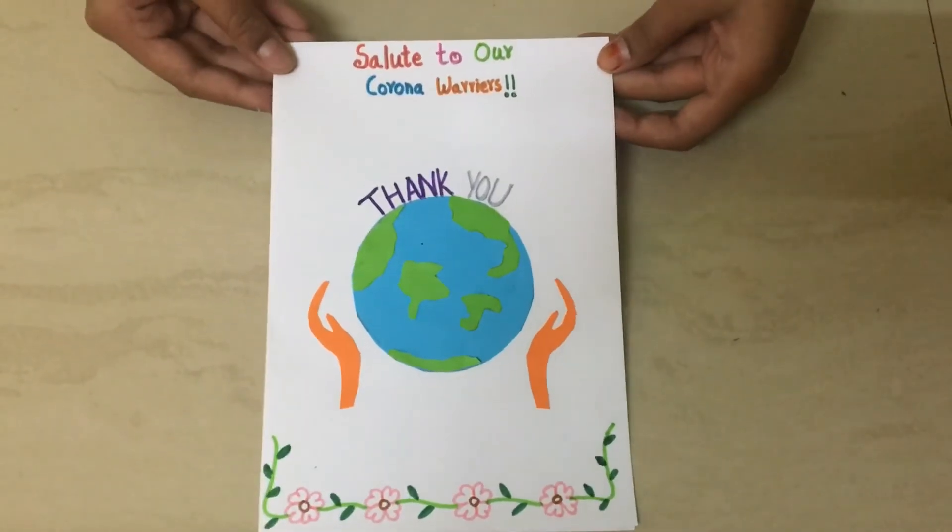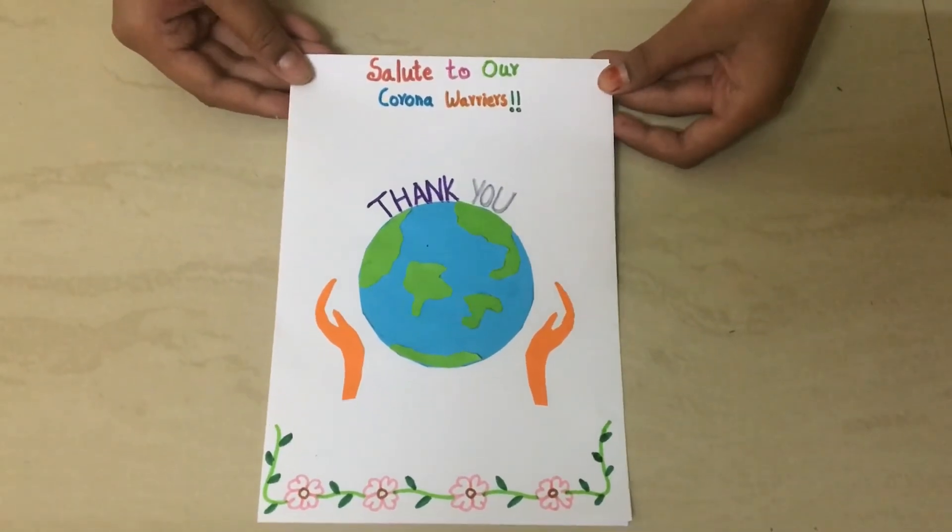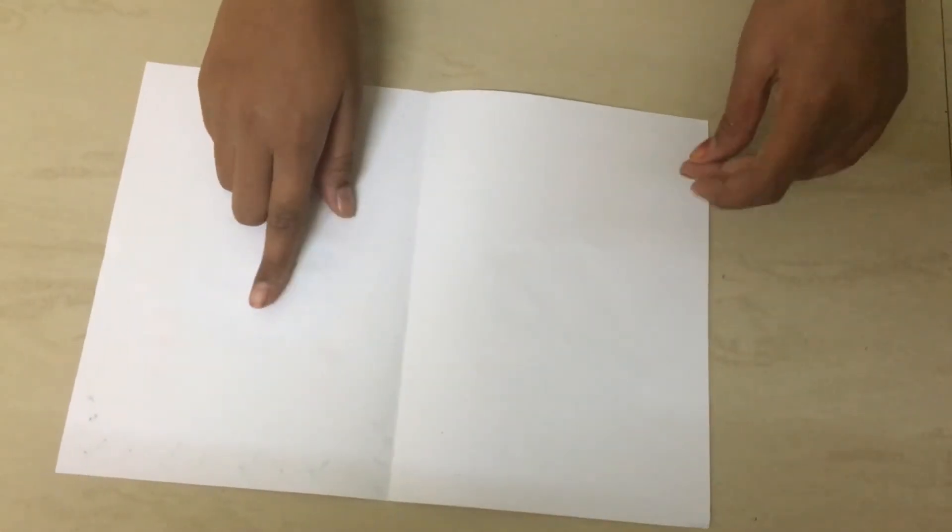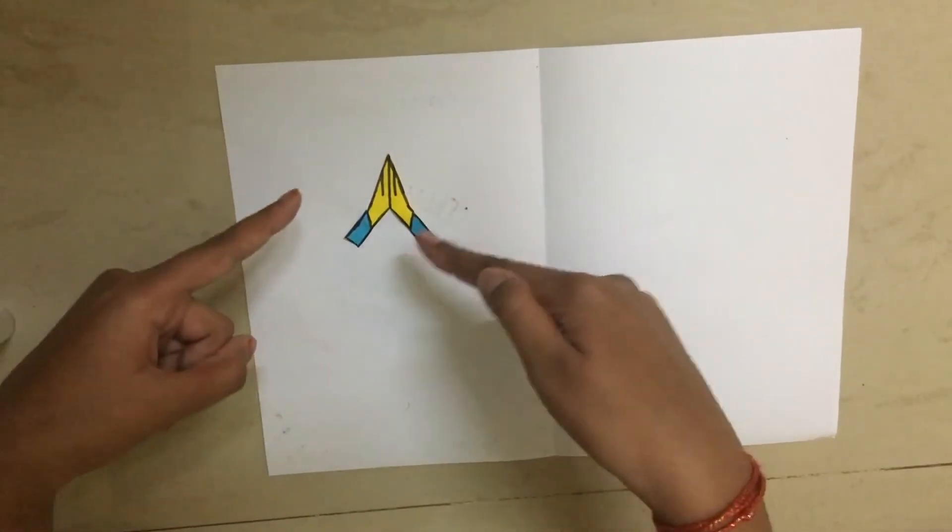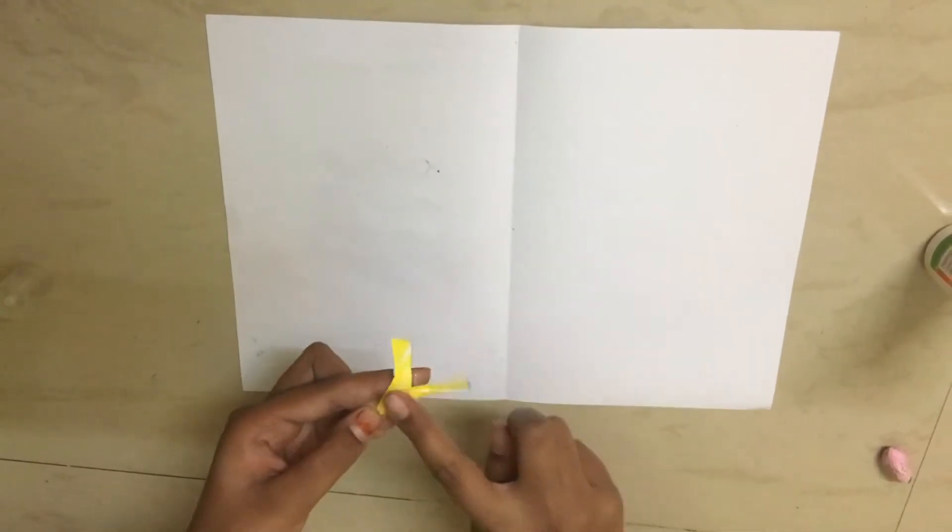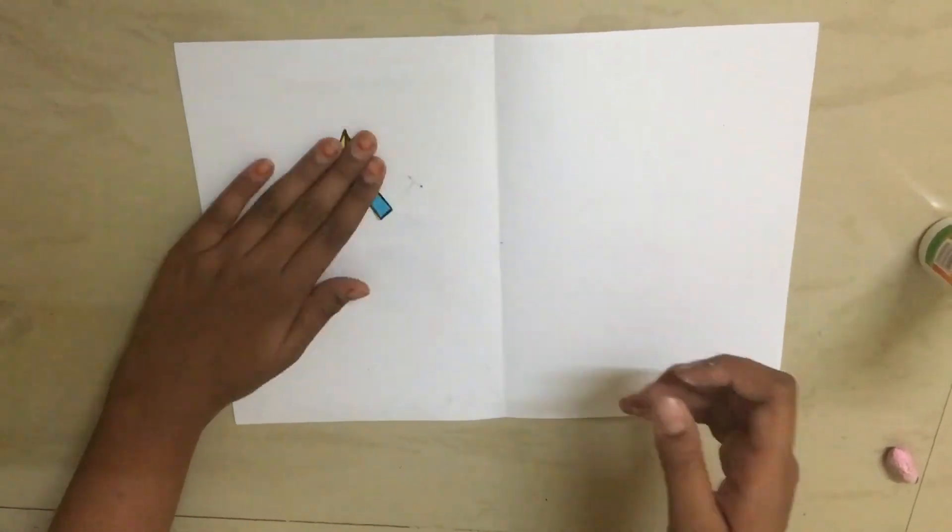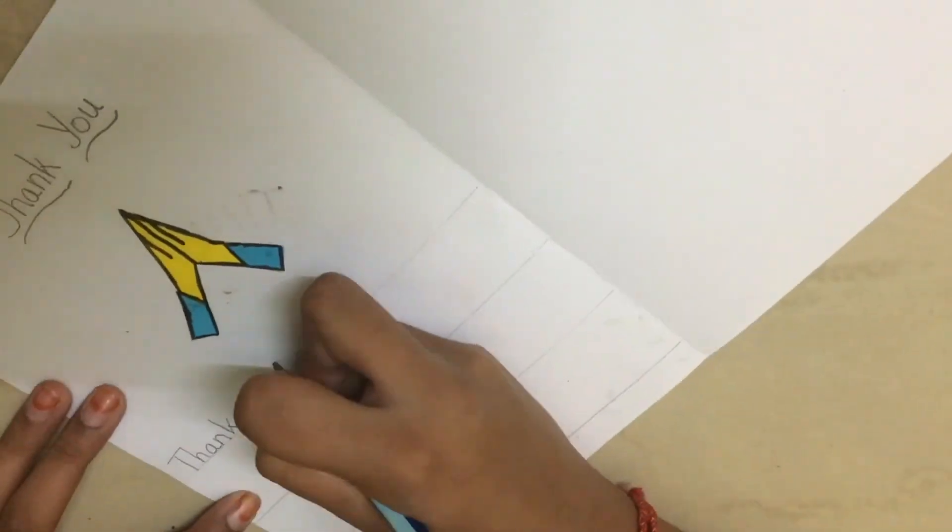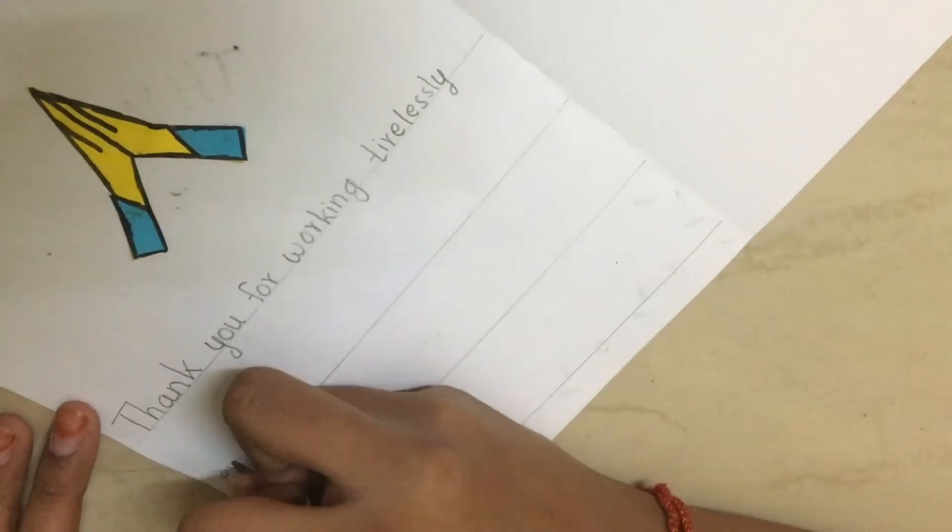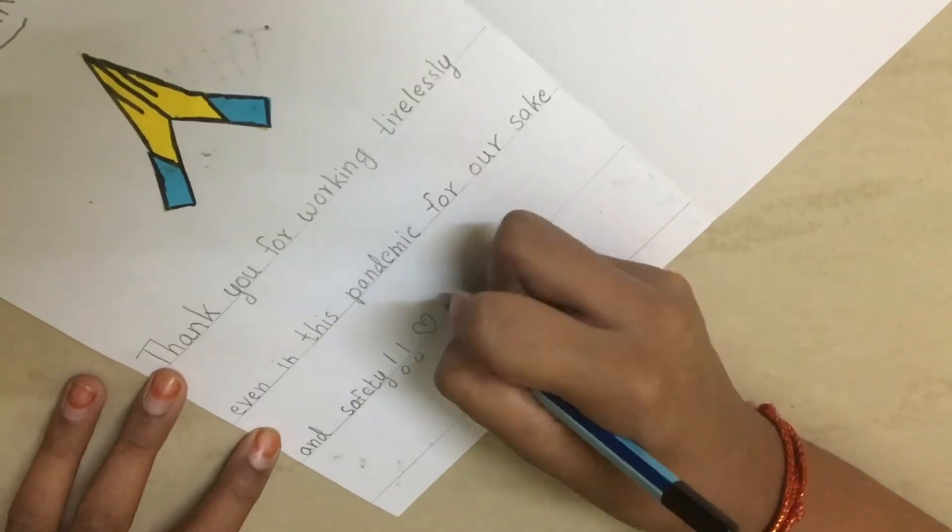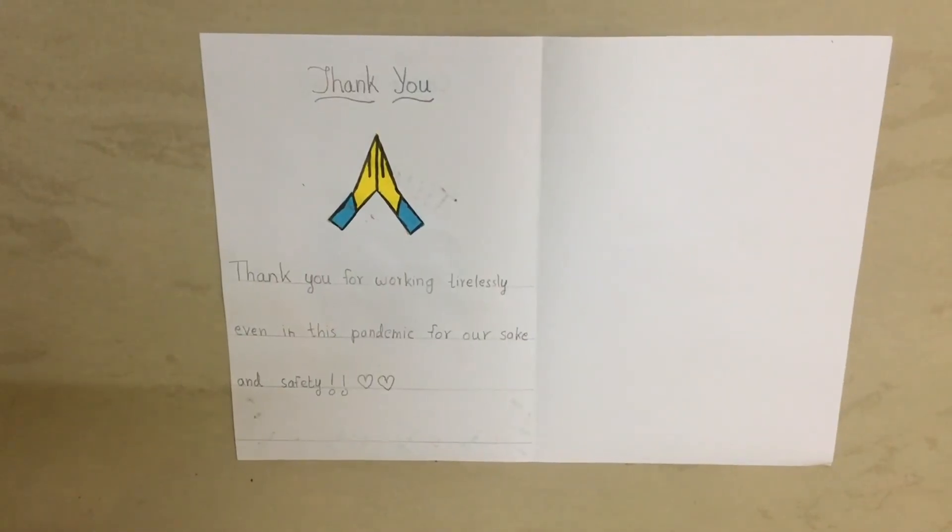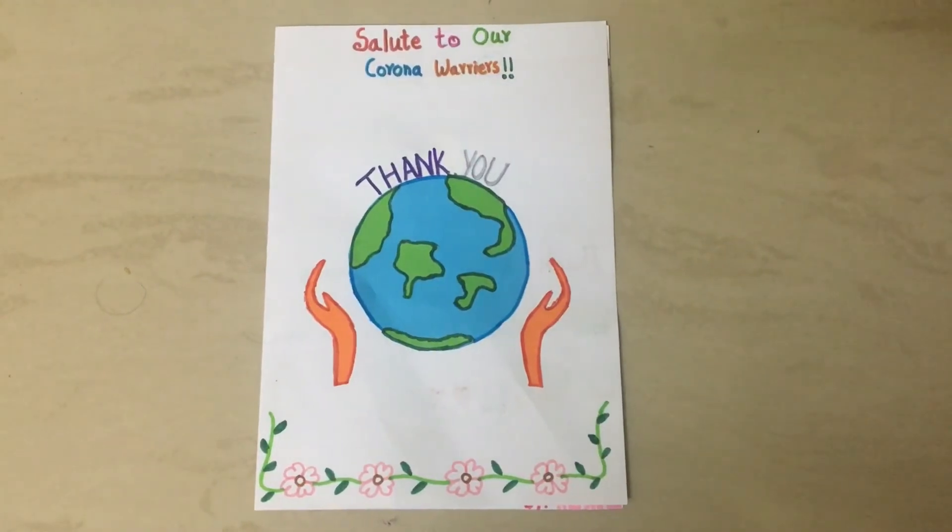Our outside part is ready. Now let's look at the inside part. Over here we will do one decoration, and over here you can write anything, the message. Now trace this with a sketch. So this is our card, guys.